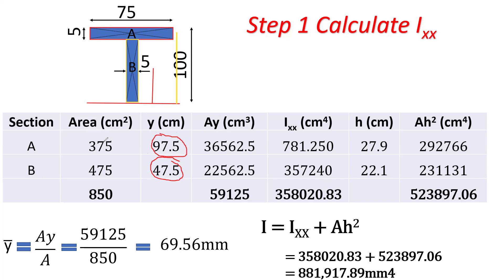To get AY, I multiply area by distance. You get this by this. If you use your calculator, 375 times 97.5, you'll get 36,562.5. Similarly, if you multiply 475 by 47.5, you'll get 22,562.5. Now if you sum these two, AY summation, you'll get 59,125.